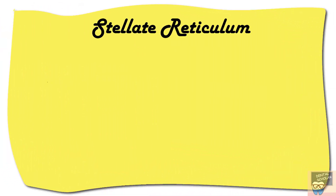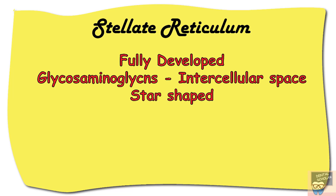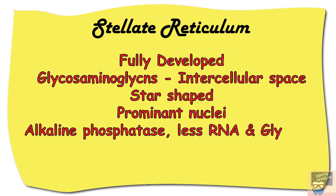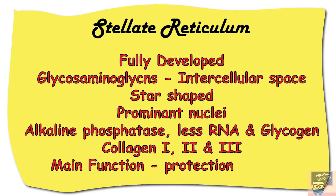Stellate reticulum cells are fully developed by the early bell stage, though they appear in the cap stage. They produce and secrete glycosaminoglycans into the intracellular space and are star-shaped with prominent nuclei. They have alkaline phosphatase, RNA, and glycogen. Although epithelial cells, they show mesenchymal function by secreting collagen types 1, 2, and 3. Their main function is to protect inner enamel epithelial cells and maintain the shape of the enamel organ.